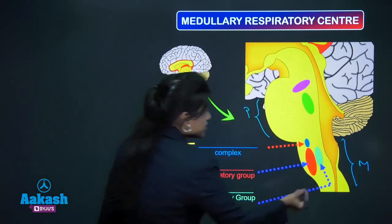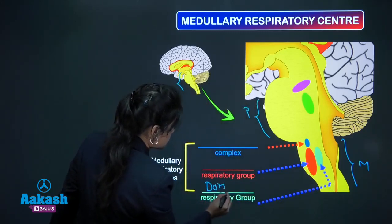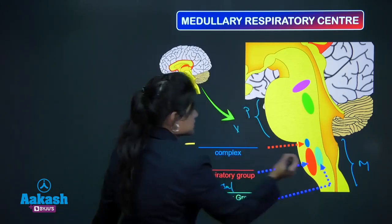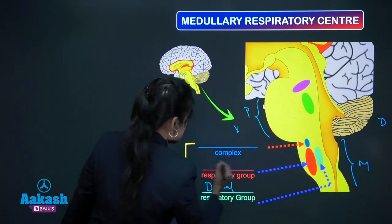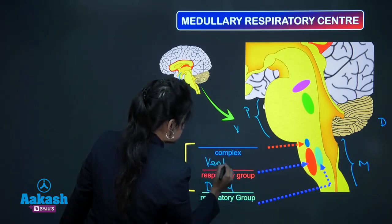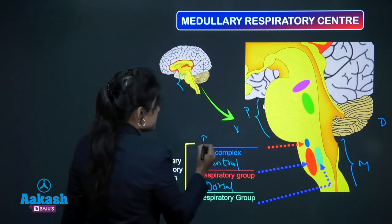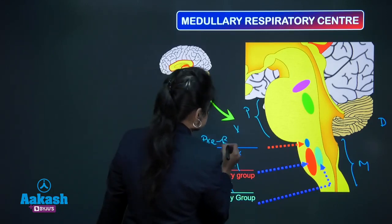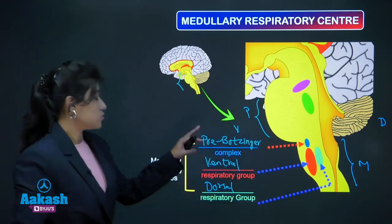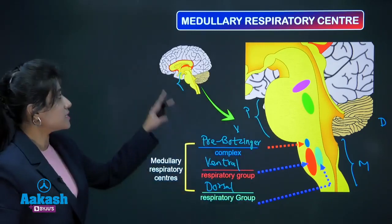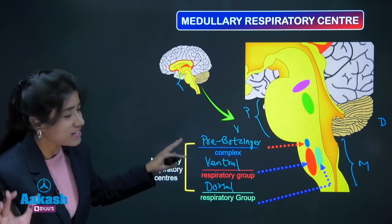Just now I told you we are having — this is your dorsal respiratory group of neurons, because we know this is the ventral side and this is the dorsal side. This one is your ventral respiratory group of neurons, and this small one is your pre-Bötzinger complex. These are your medullary respiratory centers.